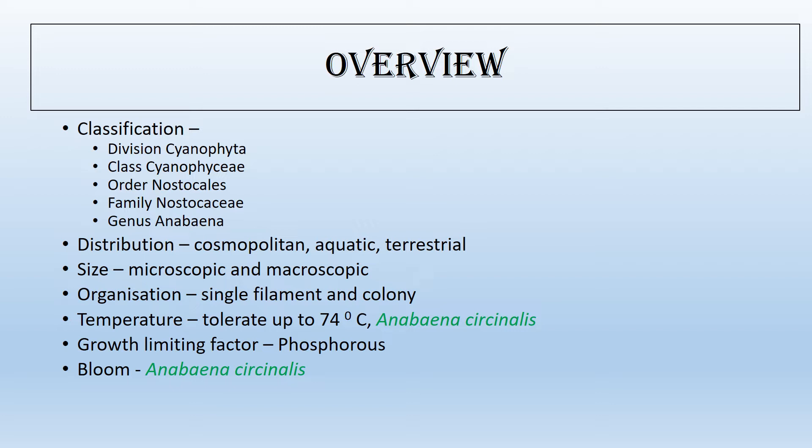The classification of Anabaena: it belongs to Division Cyanophyta, Class Cyanophyta, Order Nostocales, Family Nostocaceae, and Genus Anabaena. It is of cosmopolitan distribution — mostly aquatic, but it can also be found in a few terrestrial habitats, especially damp soil.